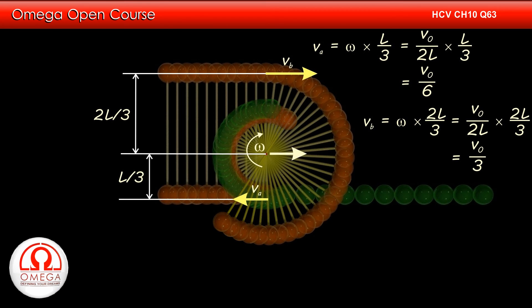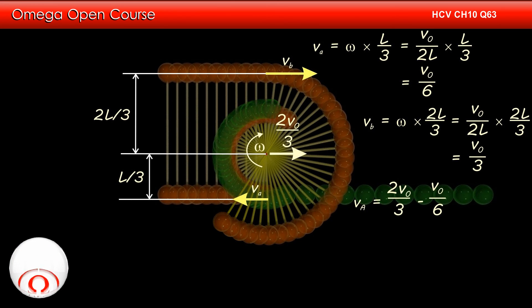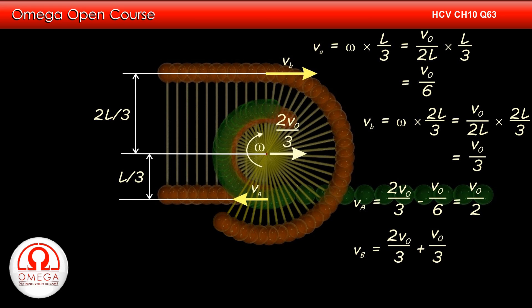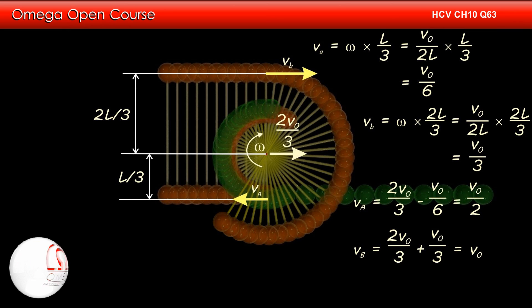The center of mass is moving with speed 2V0/3 in the forward direction. Therefore, the speed of A in our frame is 2V0/3 − V0/6 = V0/2, and the speed of B is 2V0/3 + V0/3 = V0. Thus the speed of A is V0/2 and that of B is V0. This is the answer to part A of the question.